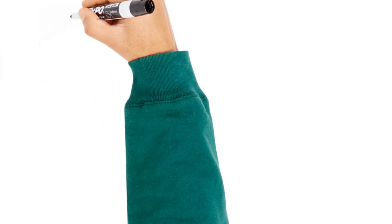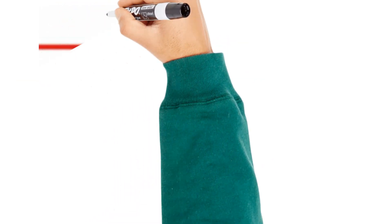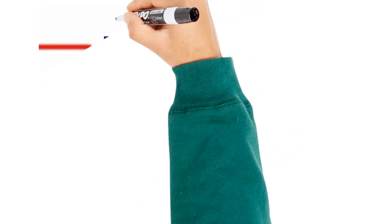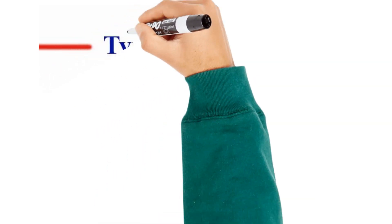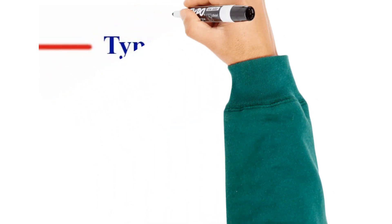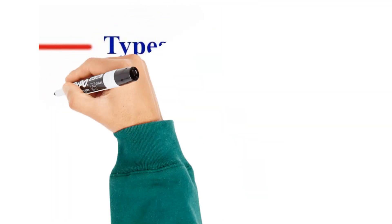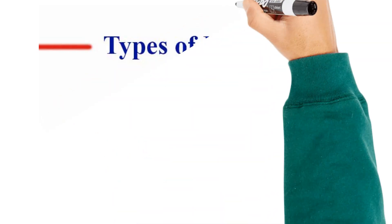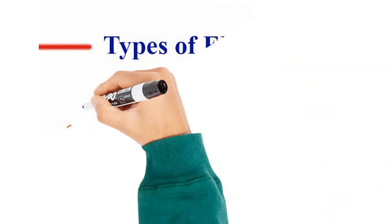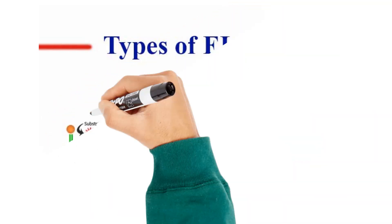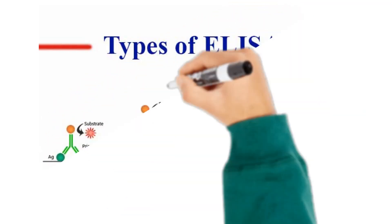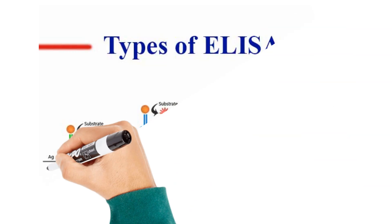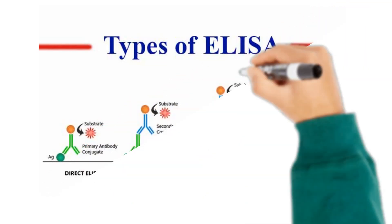Let's now go through the principles of some of these assays. Enzyme-linked immunosorbent assay (ELISA) is used to detect whether a target antigen is present in the sample and can be used in different formats such as direct, indirect, competitive, and sandwich methods.